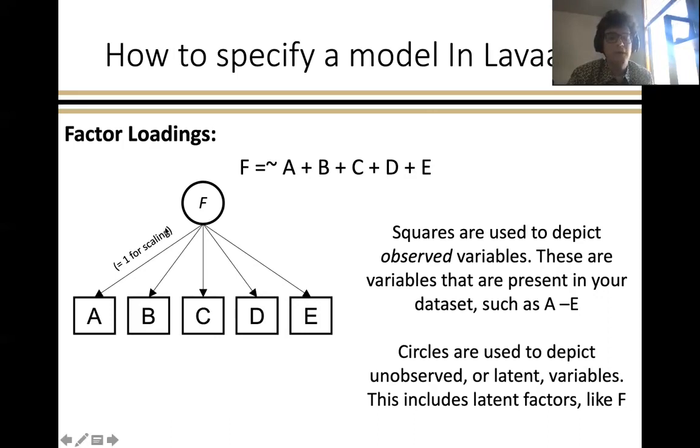Just a note to say that the default behavior in Lavaan is to fix the loading of the first variable to one, and this is necessary because since f is not a variable in your data set, Lavaan and structural equation modeling more generally need some sort of anchoring point so that it knows what kind of scale to put this latent factor on. So again, unless you tell it to do otherwise, Lavaan will fix that loading for the first variable to one so it knows how to scale the latent factor.